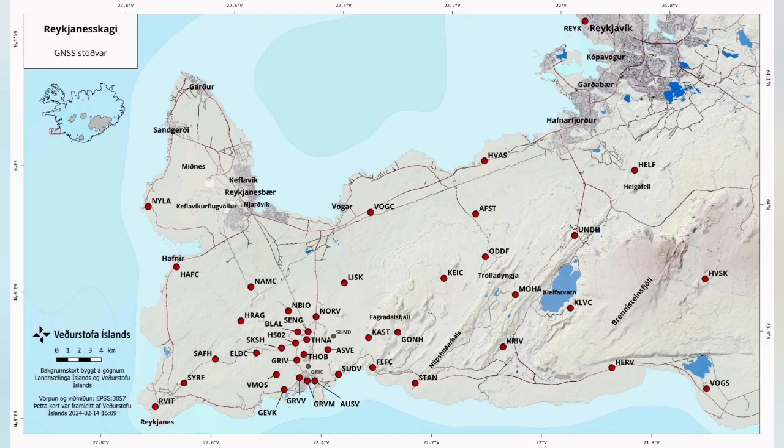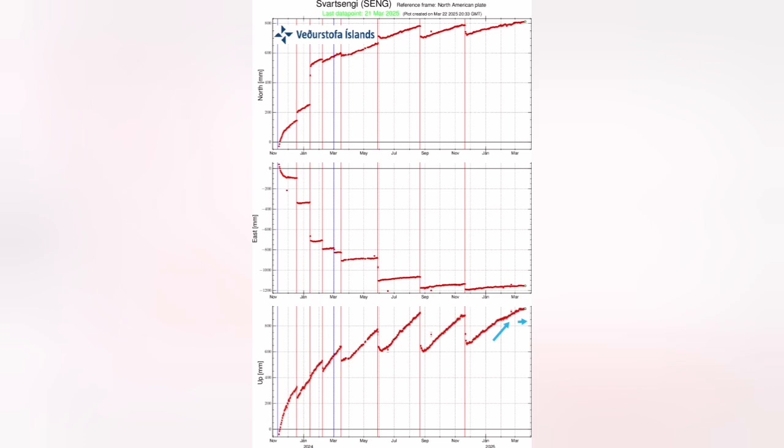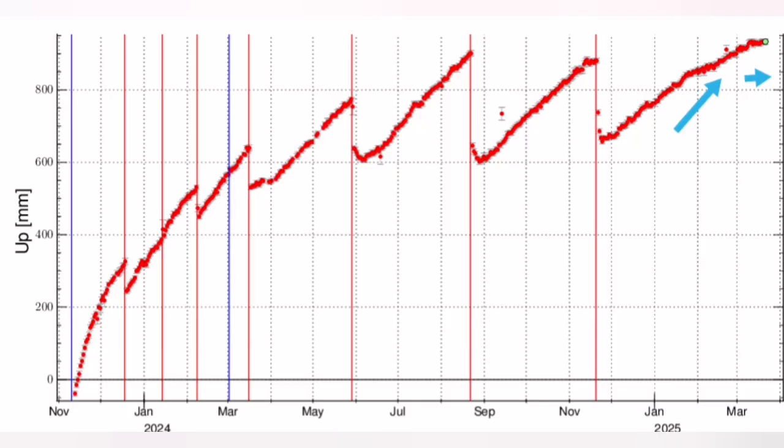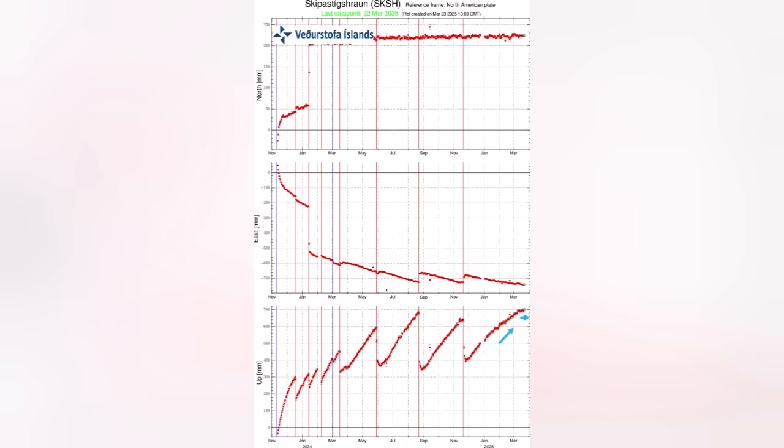Our GPS data measures the distance between these stations and the satellites in orbit. When we plot them on a diagram, we can see the amount of land uplift or land rise. At the moment we see that the land rise has stopped, like what happened in November 2024 just before the eruption.